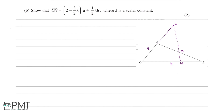Moving on to part B, we're asked to show that the vector ON is equal to (2 minus three over two lambda) a plus one half lambda b, where lambda is a scalar constant. We can do this by going from O to C and then from C to N, which makes it easy to break down into a's and b's. So the vector ON is equal to OC plus CN.